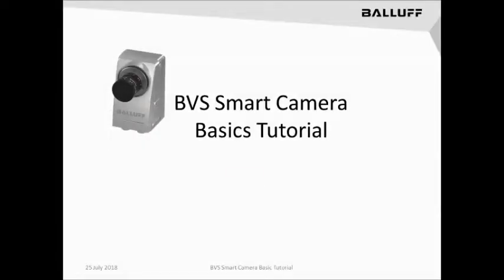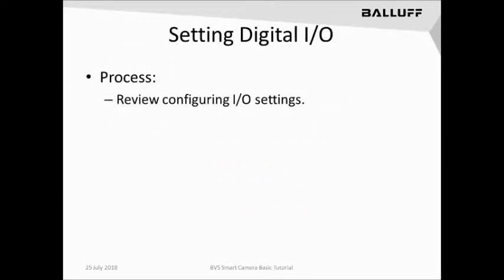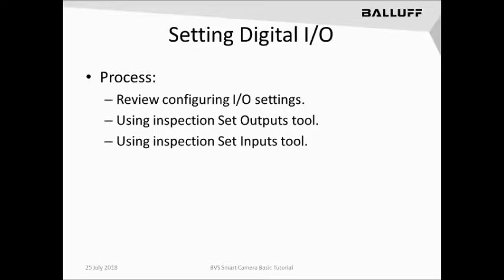In this lesson, we're going to look at the different ways that we can use the digital outputs and digital inputs of the camera to show results from our inspection. We'll start by reviewing the configuration of the IOs themselves in the settings menus. Next, we'll look at how to set up the digital outputs based on inspection results, and then we'll learn how to use inputs coming into the camera to integrate into our application.